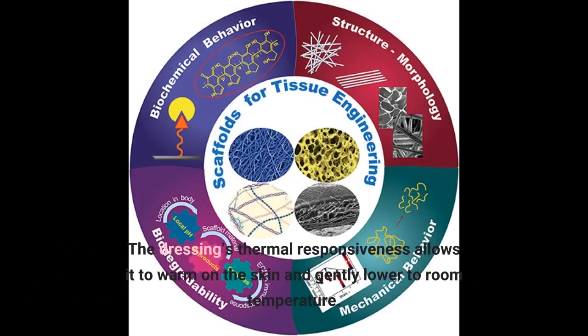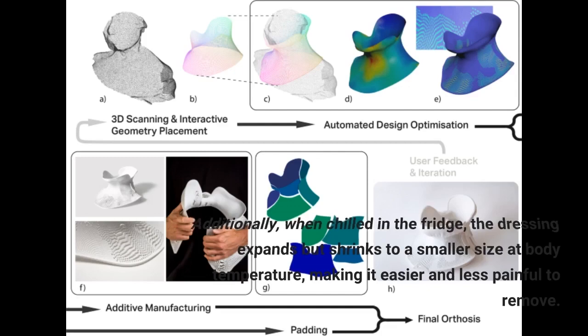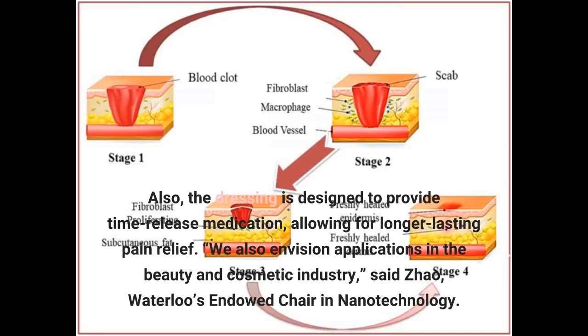The dressing's thermal responsiveness allows it to warm on the skin and gently lower to room temperature. Additionally, when chilled in the fridge, the dressing expands but shrinks to a smaller size at body temperature, making it easier and less painful to remove. Also, the dressing is designed to provide time-release medication, allowing for longer-lasting pain relief.